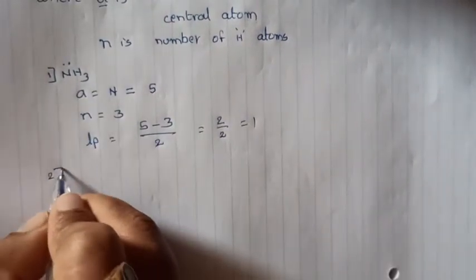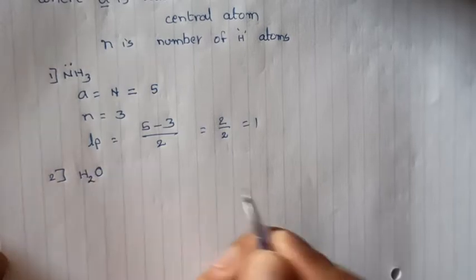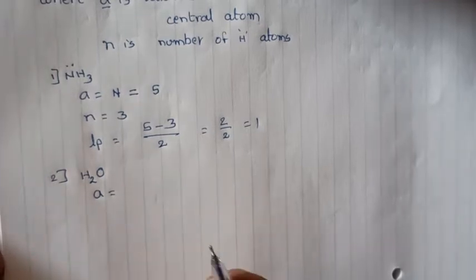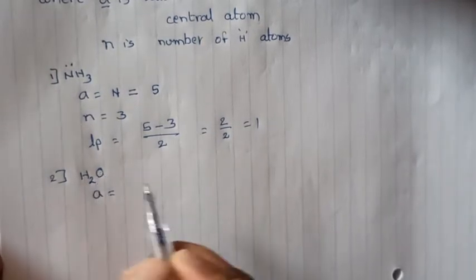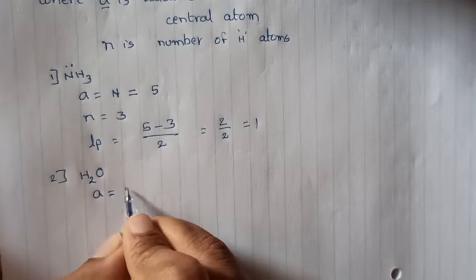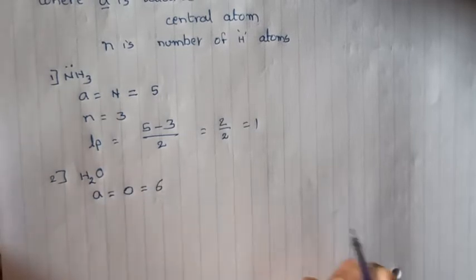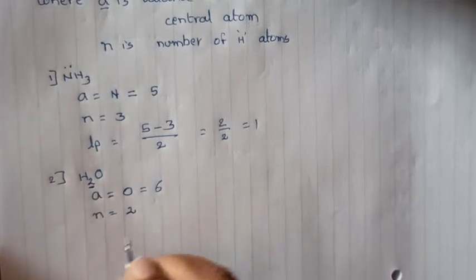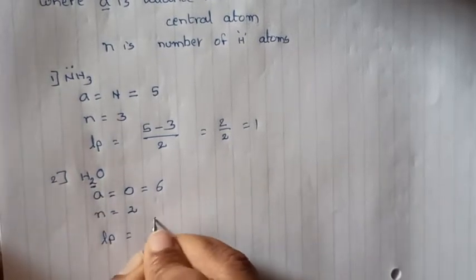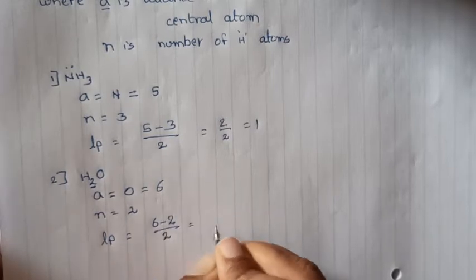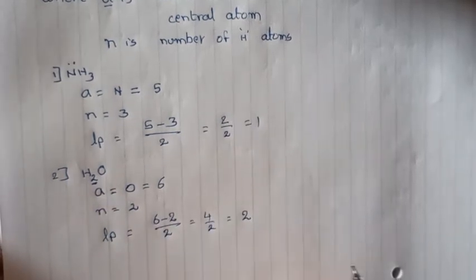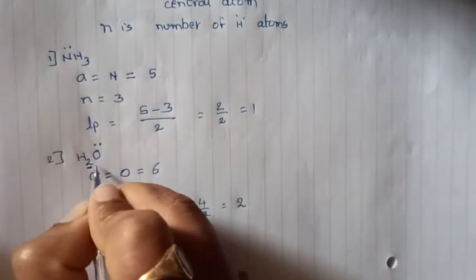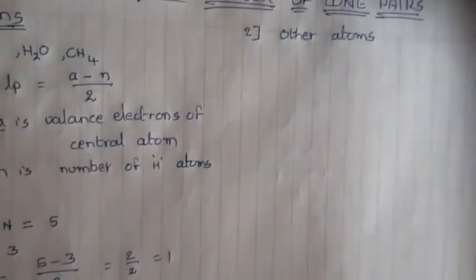Similarly, for the H₂O molecule, let's find how many lone pairs are on the central atom oxygen. A is the number of valence electrons of oxygen; oxygen belongs to the 16th group, so 6 electrons. N is the number of hydrogen atoms, which is 2. Substituting: (6 minus 2) divided by 2 equals 4 divided by 2, which gives 2 lone pairs. That's why in H₂O, oxygen has two lone pairs.